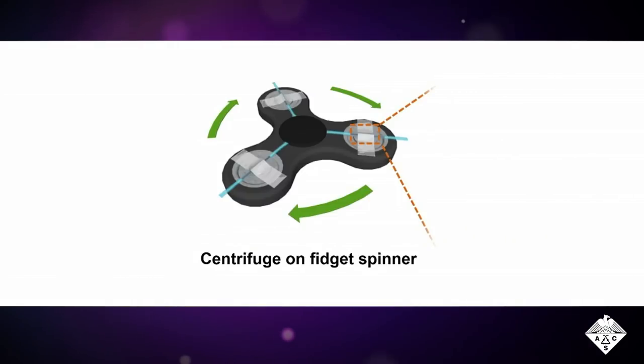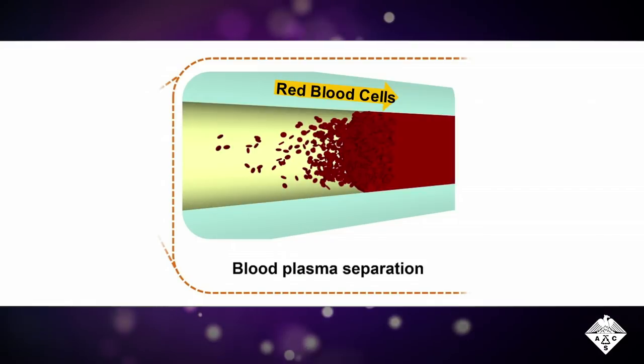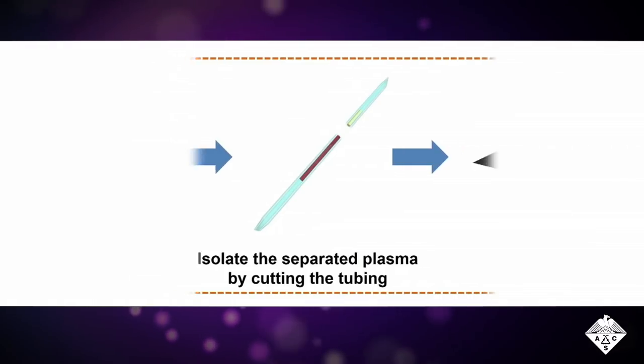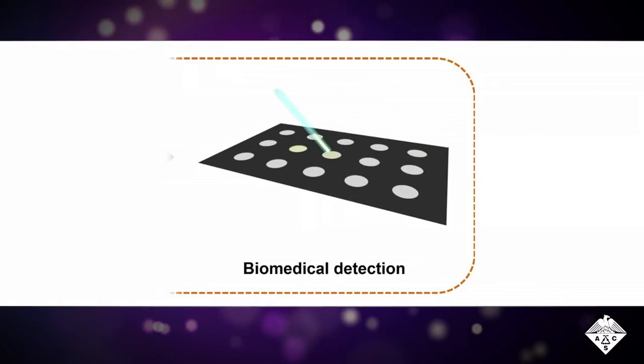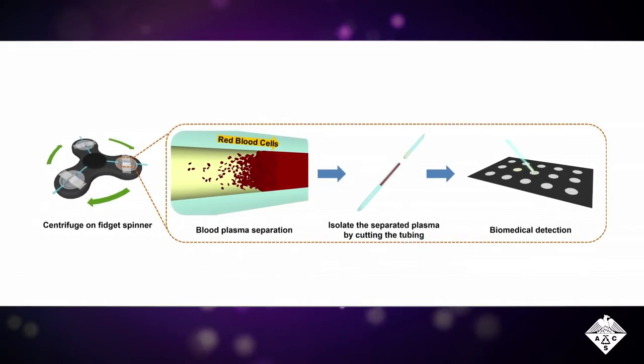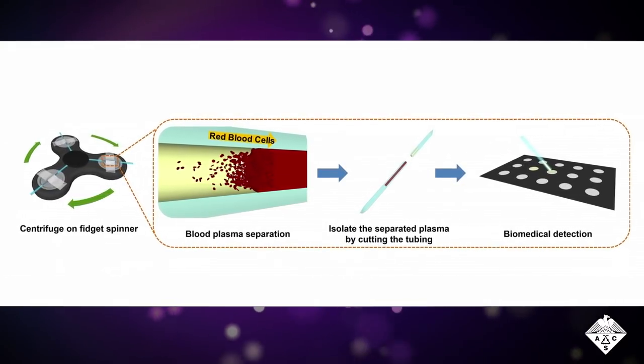To verify that the plasma was suitable for diagnostic tests, the researchers spiked blood with a protein produced by the HIV-1 virus, separated the plasma with a spinner, and performed a paper-based detection test. The inexpensive, simple method detected clinically relevant concentrations of the viral protein in only a drop of blood.